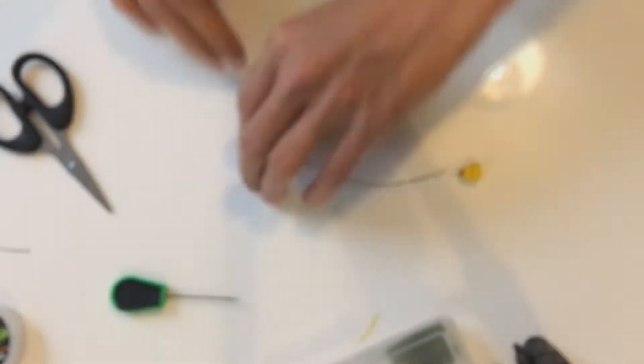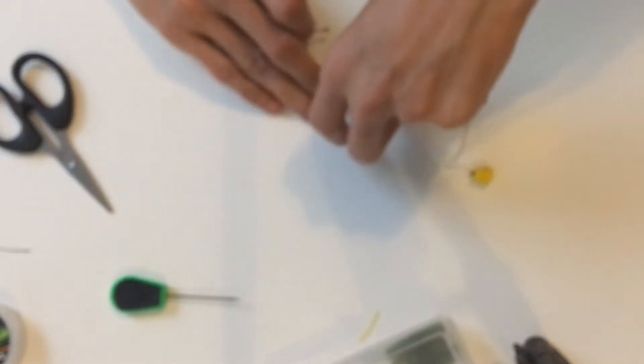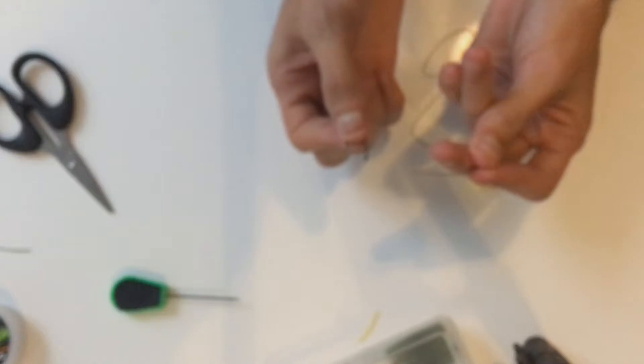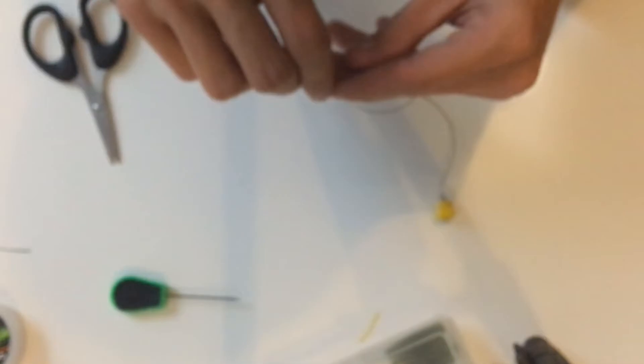Now we're going to take our hook and we're going to go through the back of the eye, so like we're going to go through that way. As I said before my scissors are shocking so I'm just going to try and create a cleaner cut to get it through the eye a lot easier.